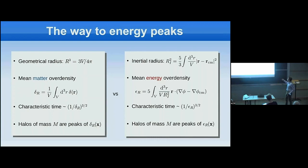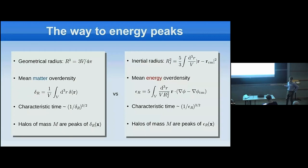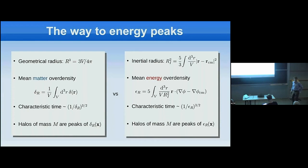The mean energy over-density governs the dynamics of r_i in the same way that δ governs the geometric radius. It is an average over the volume of r·∇φ — the radial component of the acceleration relative to the center of mass, or the infall velocity in the initial conditions. This object has the dimensions of a potential, which is why we call it the energy over-density. Taking the second derivative of r_i brings in r̈ = −∇φ, yielding this quantity — essentially the trace of the potential energy tensor.